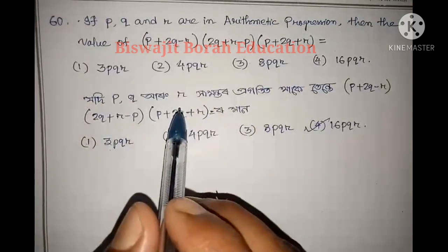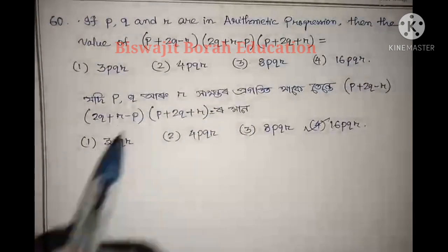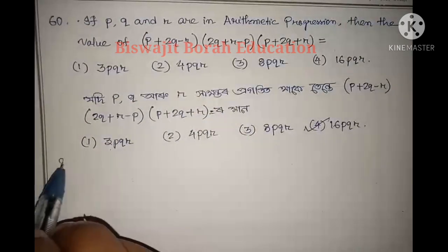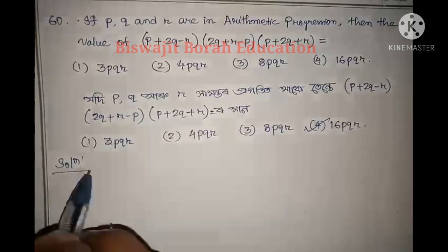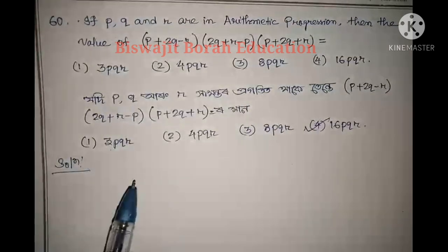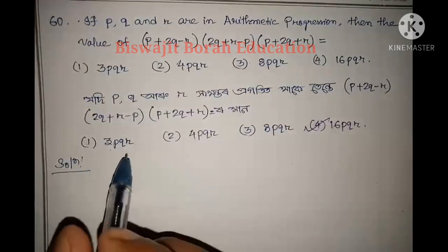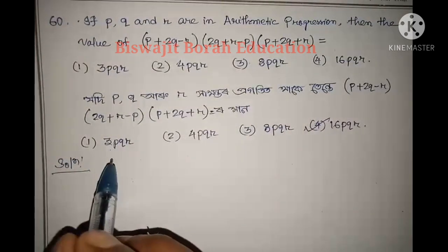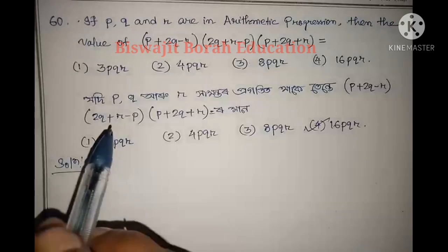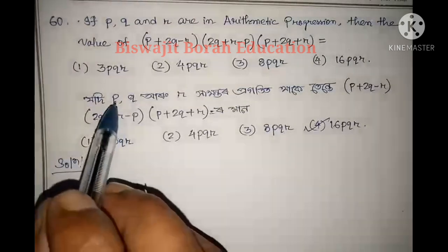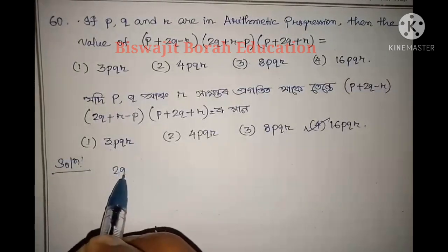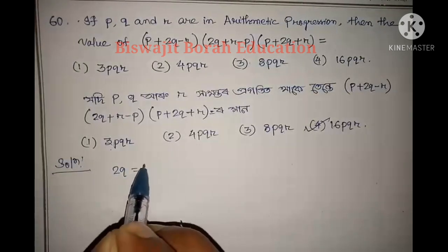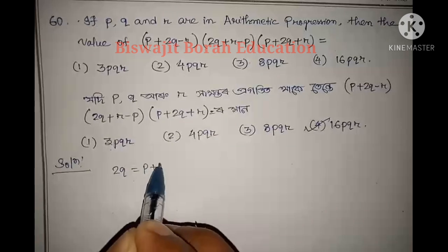The question is P, Q, R is the same property as PQR, which means PQR is the same property. The reason is PQ is the same property as PQR and the answer is PQR is the same property as P plus R.